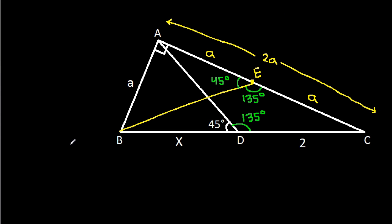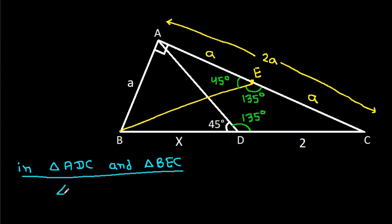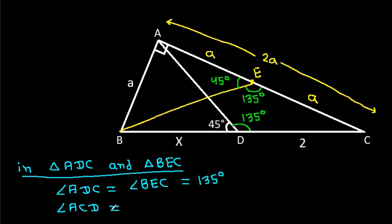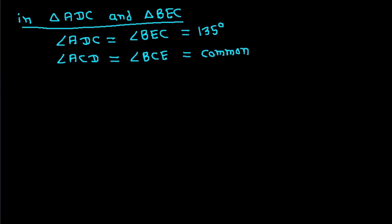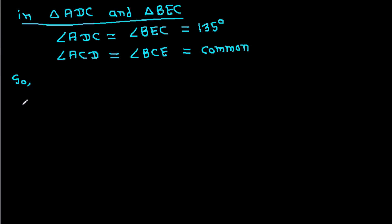And now, in triangle ABC and triangle BEC, we have angle ADC is equal to angle BEC, that is 135 degrees. And angle ACD is equal to angle BCE, that is common. So triangle ADC is similar to triangle BEC.